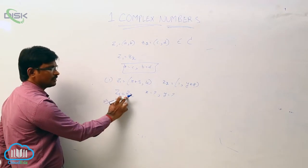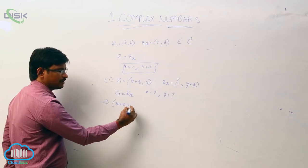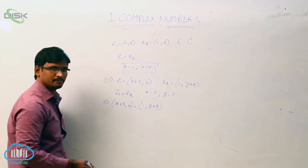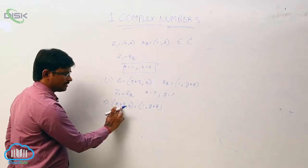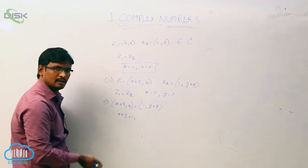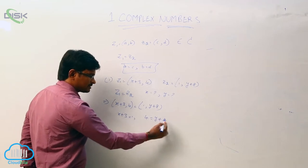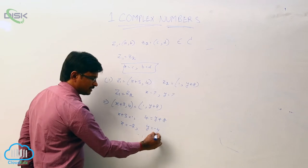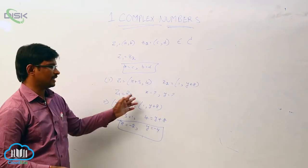So if z1 = z2, we have (x+3, 4) = (1, y+8). Equating corresponding values: x+3 = 1, which gives x = -2. Similarly, equating the second components: 4 = y+8, which gives y = -4. This is how, given two equal complex numbers, we can find the unknown values.